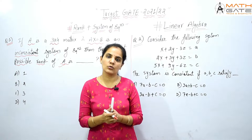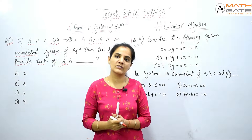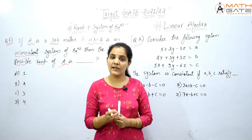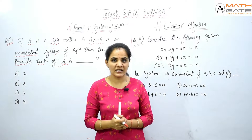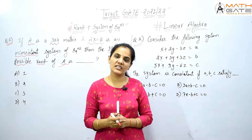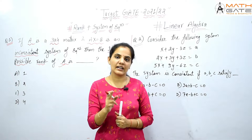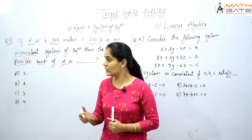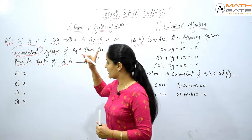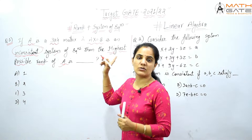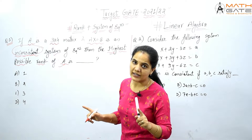In a system of equations, any linear system of equations is consistent if at least one solution exists. And a system of equations is inconsistent if not even one solution exists. Here, the system is stated to be inconsistent, meaning this system has no solution.